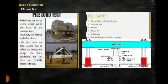In this slide I have discussed about pile load test. Preliminary pile design is first carried out on the basis of site investigations and laboratory soil testing and office study. Pile load tests are then carried out to refine and finalize the design. For these conditions, the test piles are generally tested to failure. What are the equipment of pile load test? Number 1 is anchor girder, 2 hydraulic jack, Number 3 test pile, Number 4 anchor pile, Number 5 dial gauges and last one is reaction truss or in case of truss loading.